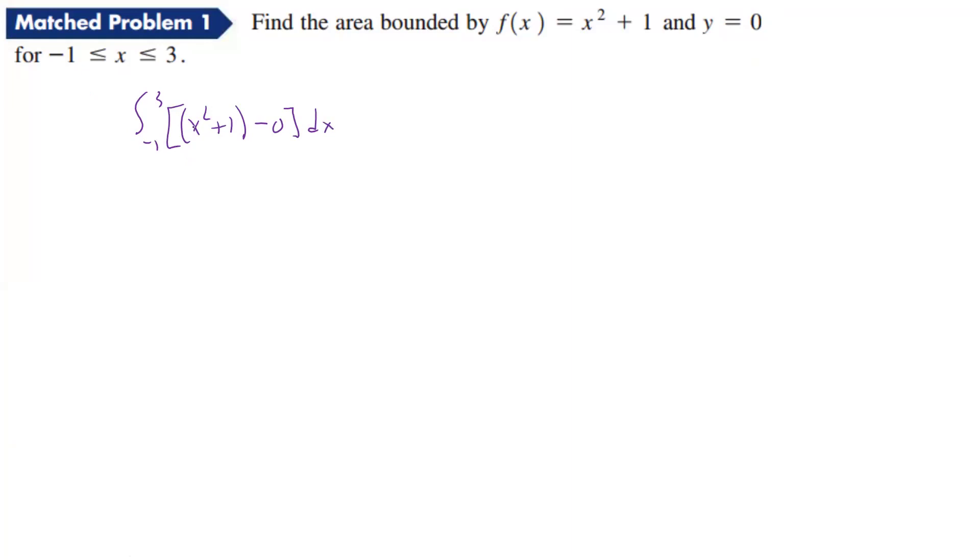Okay, well this is pretty easy. If we drop all the parentheses and subtract zero, we're just going to get x³/3 + x, and we're evaluating that from -1 to 3.